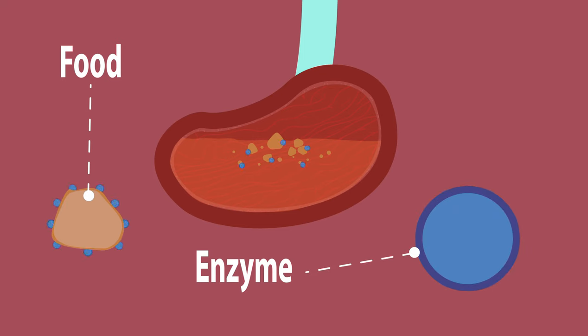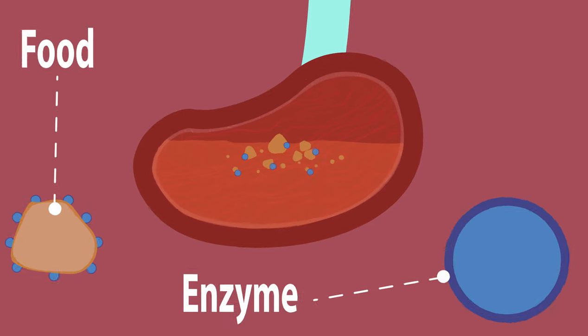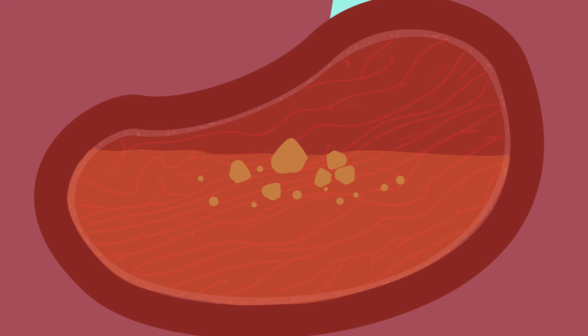Now let's fast forward to our stomach. Our chewed up, stomach-churned food has a large surface area and is mixed with the stomach's gastric juices.